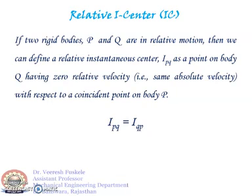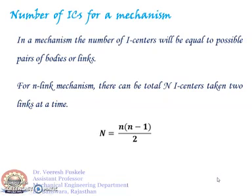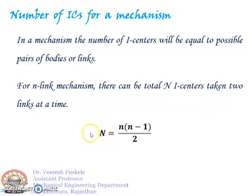Now we shall discuss the number of ICs a mechanism can have. For two bodies having relative motion between them, there is one I-center. Thus, in a mechanism, the number of I-centers equals the number of possible pairs of bodies or links. For an n-link mechanism, the total number of I-centers is N = n(n−1)/2, where n is the number of links and N is the number of I-centers.